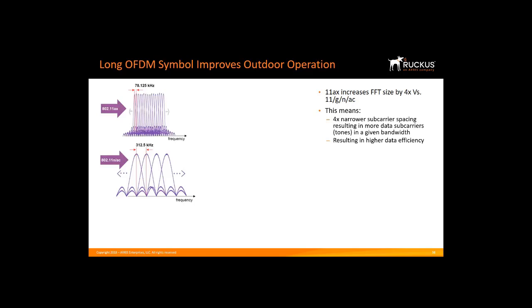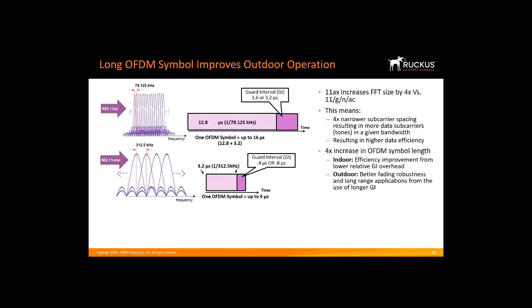However, it comes at a price, since the narrower subcarrier spacing is more sensitive to frequency offsets, phase noise, and sampling clock offsets. In the time domain, this translates to a four times longer OFDM symbol. The data portion has been extended four-fold from 3.2 microseconds to 12.8 microseconds, and the guard interval can be extended from 0.4 or 0.8 microseconds up to 3.2 microseconds. This allows us to cover both indoor and outdoor operation.